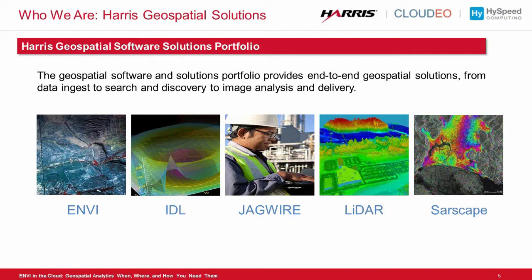Finally, we have our geospatial marketplace, which provides full access to the best commercially available satellite and aerial imagery from a single online source. Additionally, we can provide a variety of data-derived products that range from simple image orthorectification to advanced DSM and DTM models. That's just a quick overview of what we do here at Harris. I'm going to turn it over to Rebecca to tell you more about today's scenario.